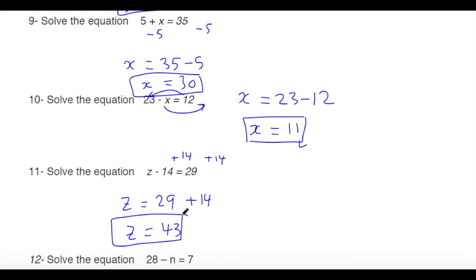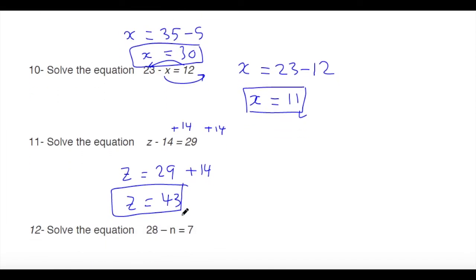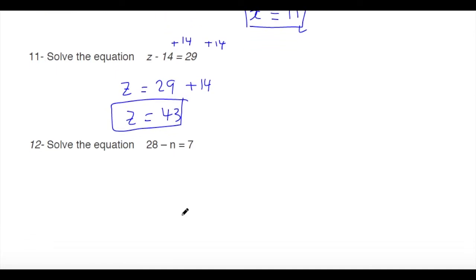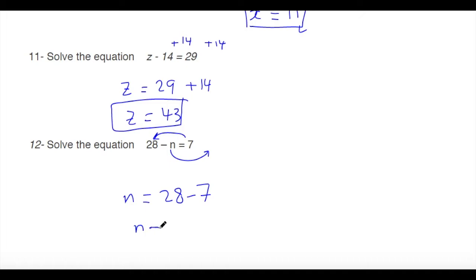Next: solve 28 minus n equals 7. We can rearrange so n equals 28 minus 7, giving n equals 21.